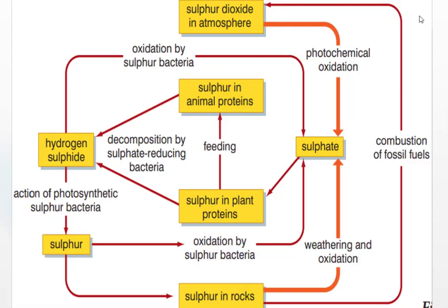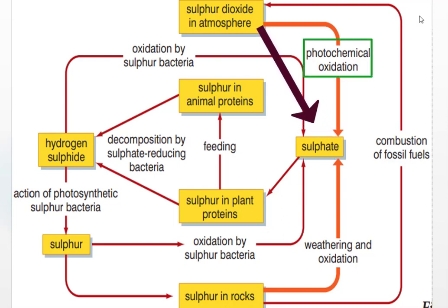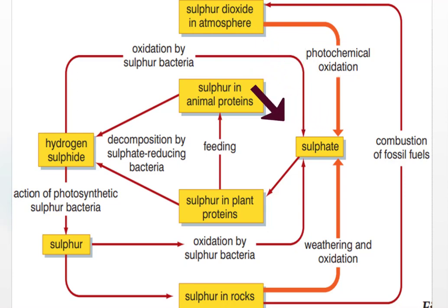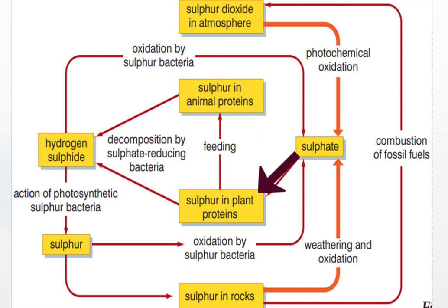As we can see from the diagram, sulfur dioxide in the atmosphere gets converted to sulfate through photochemical oxidation. Then, this sulfate in the soil gets absorbed by plants to make their own sulfur-containing proteins.